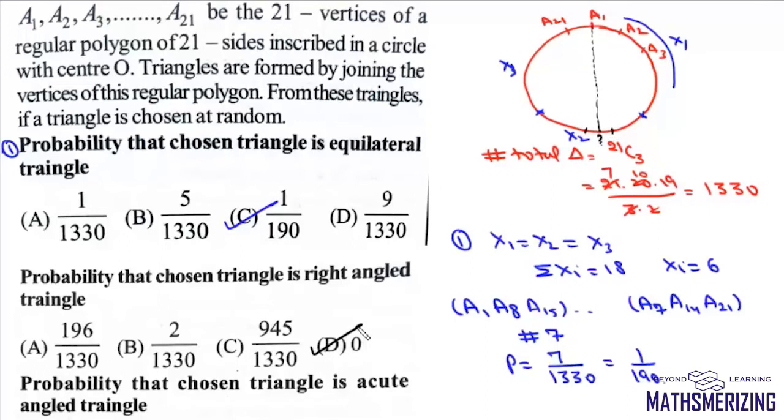Now we have to find the probability that the chosen triangle is an acute-angled triangle. What we will do is we will actually calculate obtuse-angled triangles and find how many obtuse-angled triangles are possible. Now if we choose one vertex, say a1, then there will be 10 vertices here and 10 vertices here.